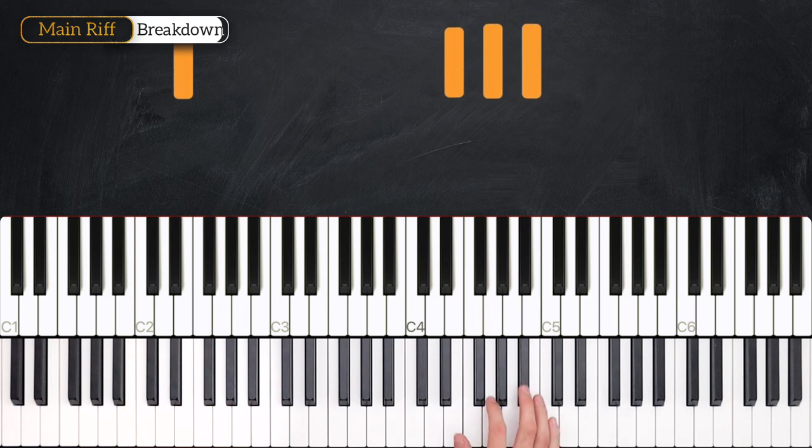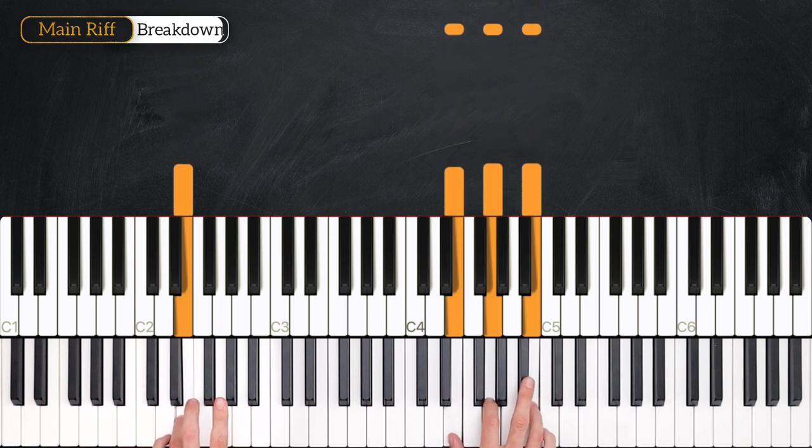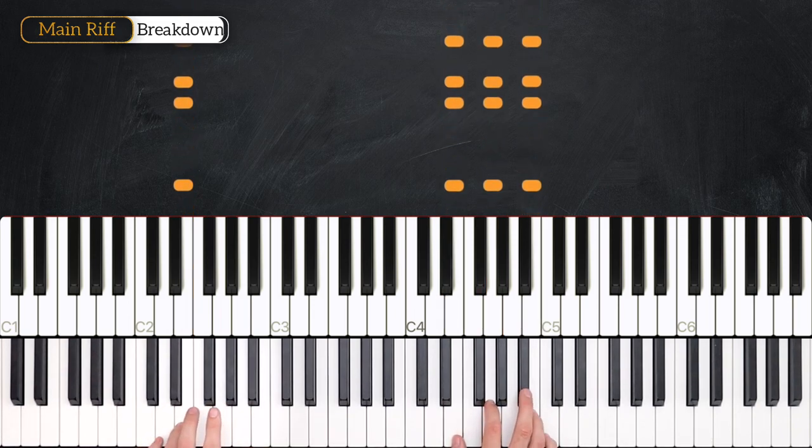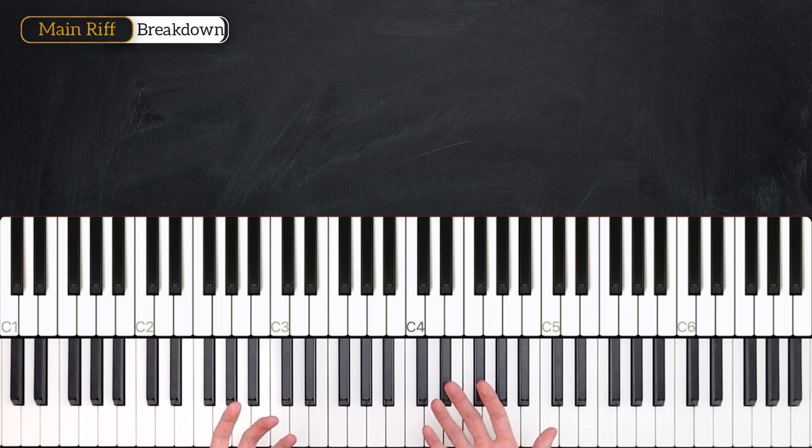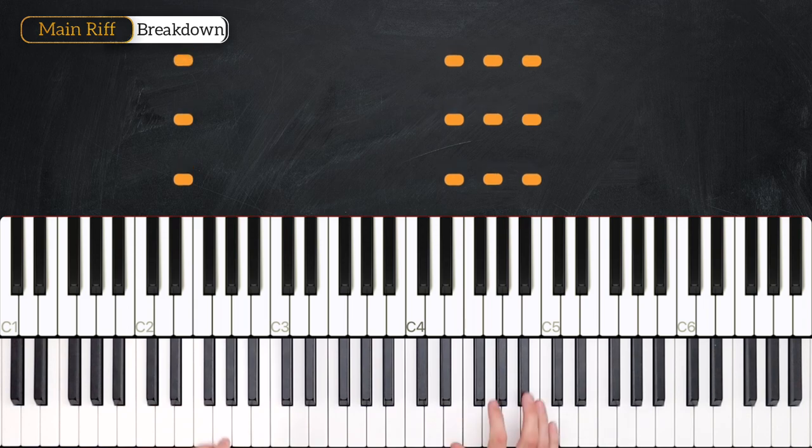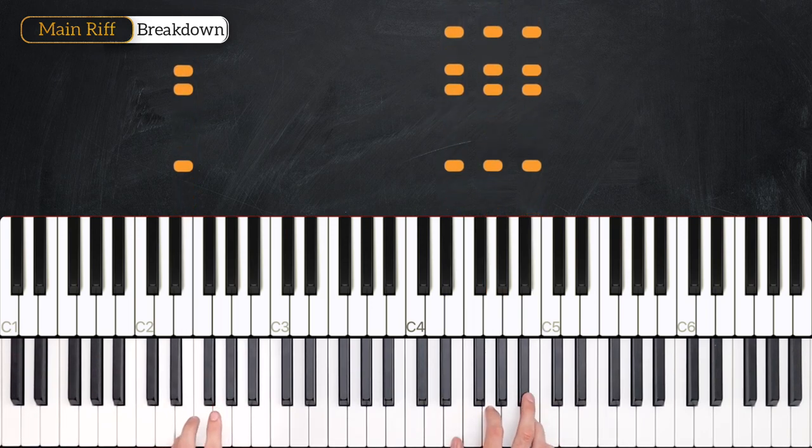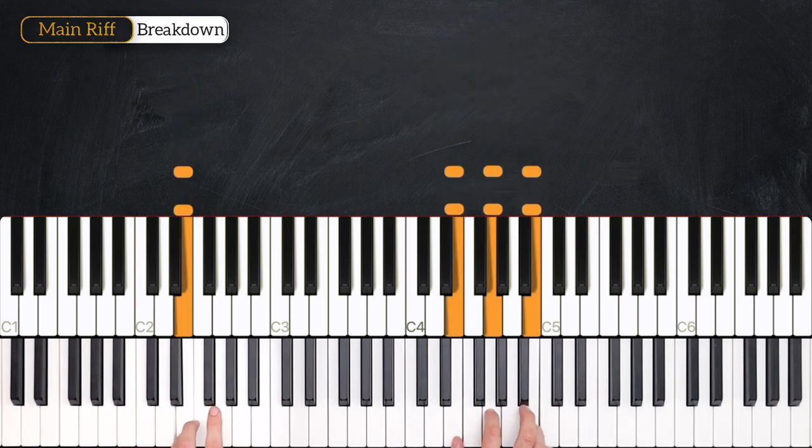And then for the next bar we're back to the original rhythm with our E minor. So that will be one E and a, two E and a, three E and a, four E and a. And this time we're going to play exactly the same thing for two bars.